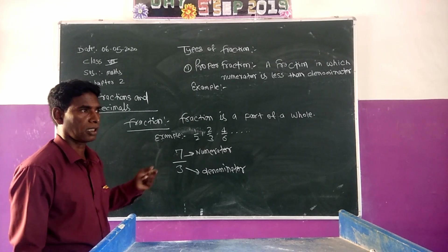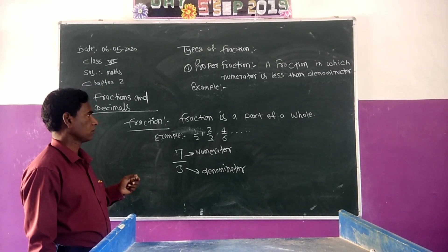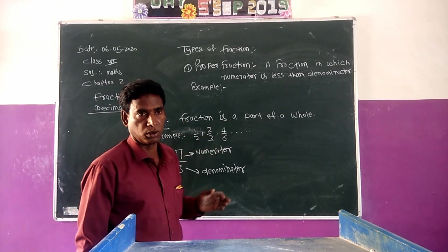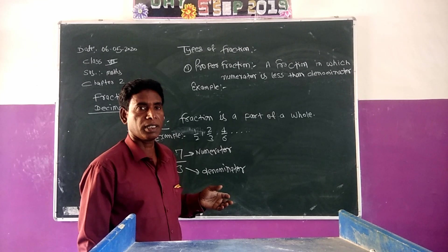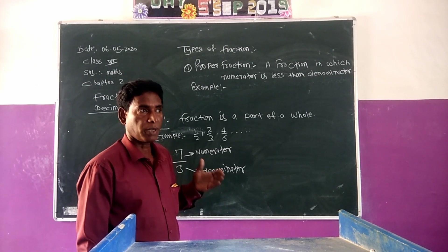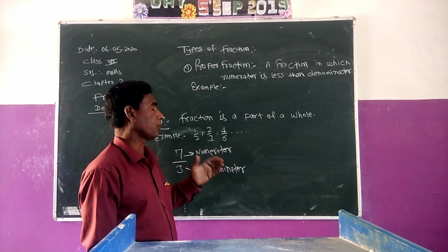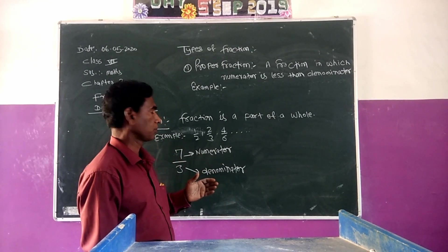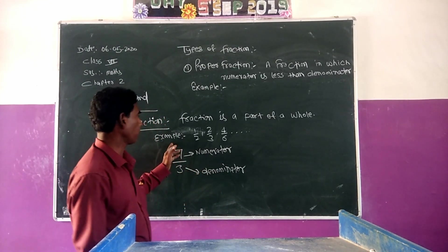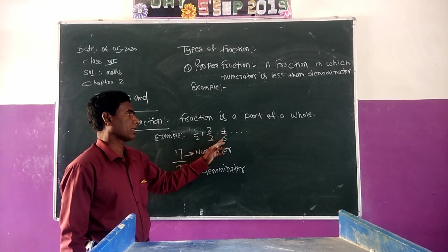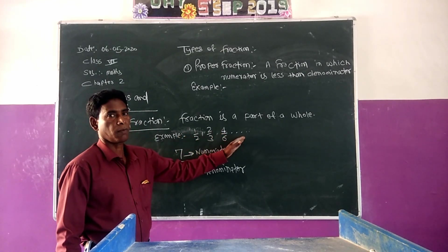What is a fraction? A fraction is a part of a whole. That is the definition: a fraction is a part of a whole. For example, 1 by 2, 2 by 3, 4 by 6, etc.